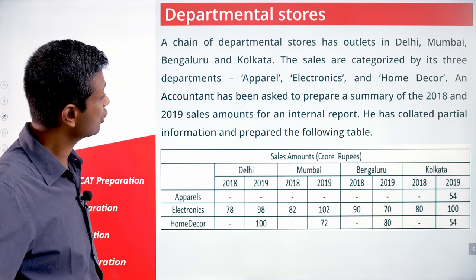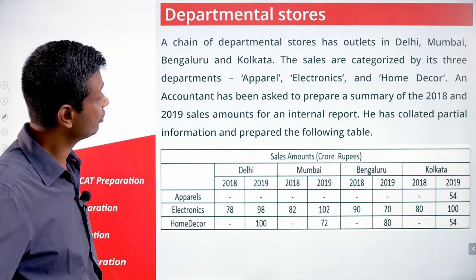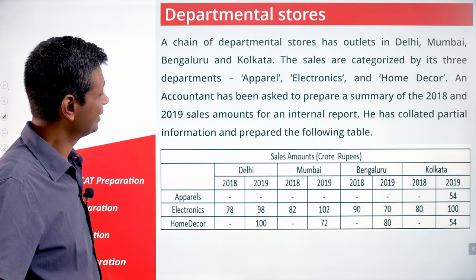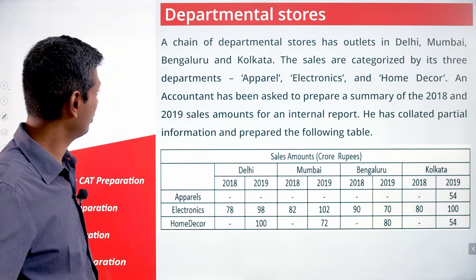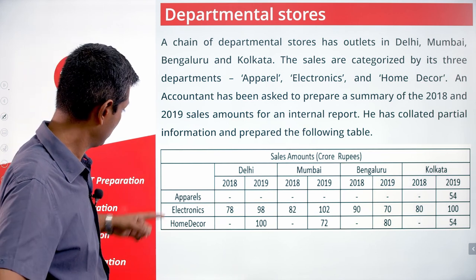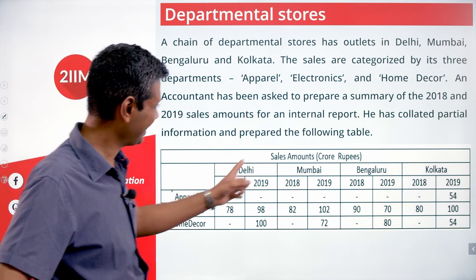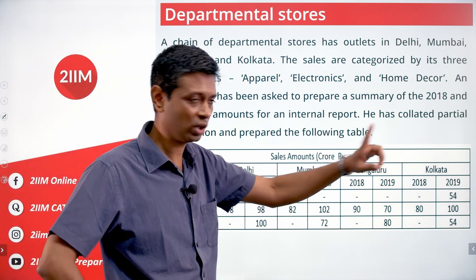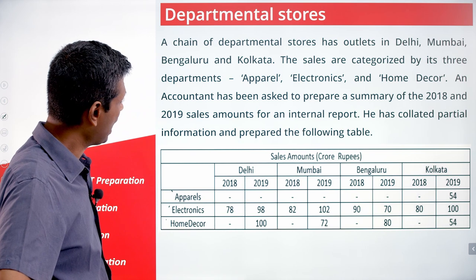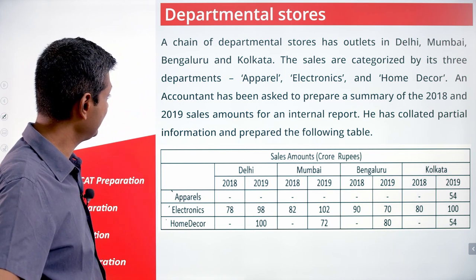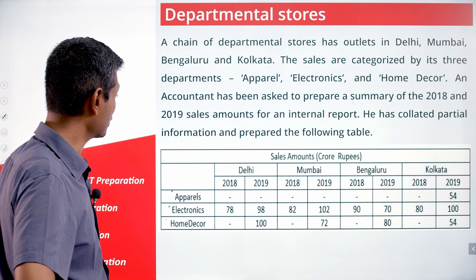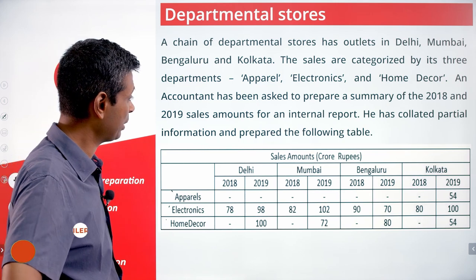Departmental stores. A chain of departmental stores has outlets in Delhi, Mumbai, Bangalore and Kolkata. The sales are categorized by three departments: Apparel, Electronics and Home Decor. An accountant has been asked to prepare a summary of the 2018 and 2019 sales amounts for an internal report. He has collated partial information and prepared the following.